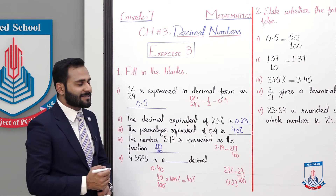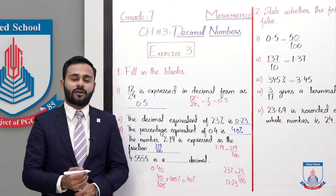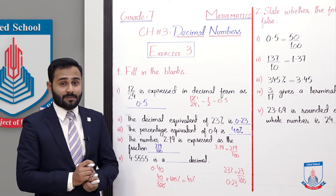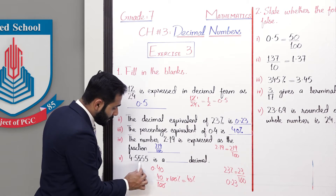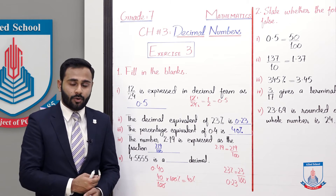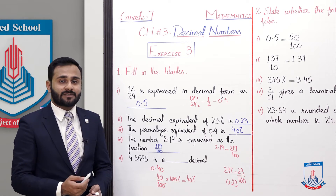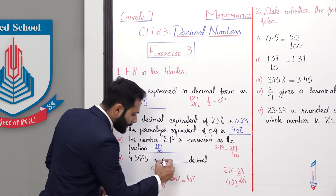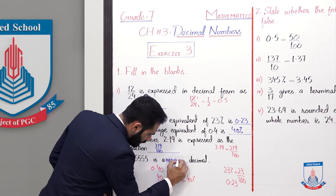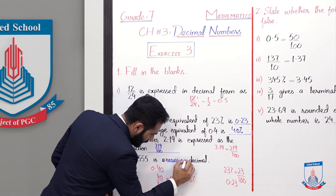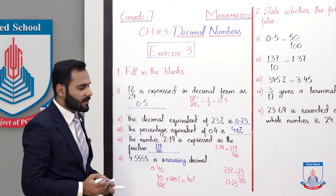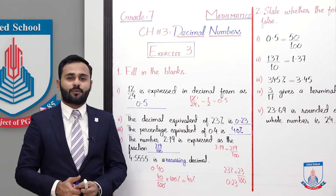The next blank: 4.5555... is a dash decimal. As told in the last lecture, when the same numbers keep repeating, this is called a recurring decimal. So fill the blank: recurring decimal.